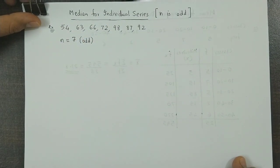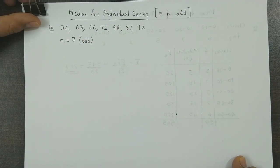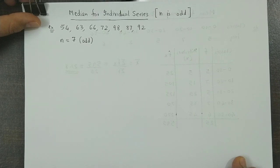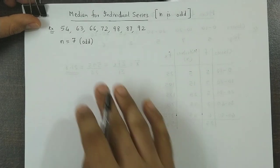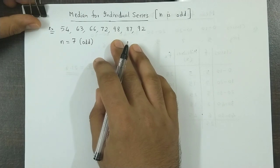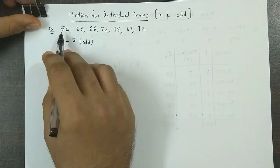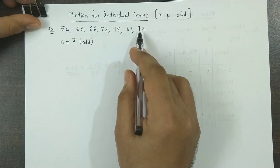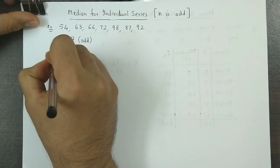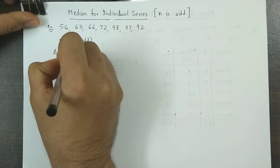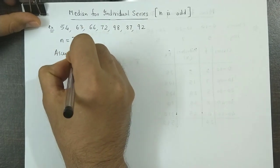Now in order to find the median we arrange the data in ascending or in descending order. Now let me put down the data in ascending order because it's easy to put data in ascending order. So first of all we need to arrange the data in ascending order.